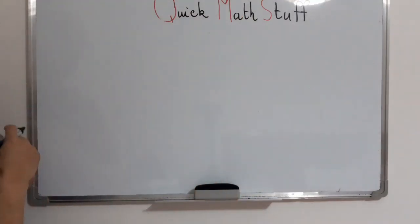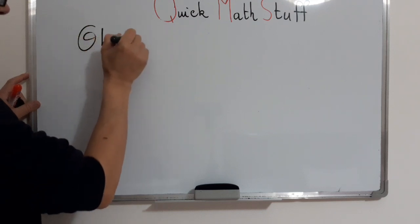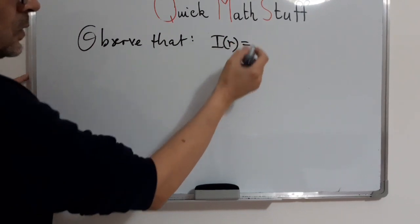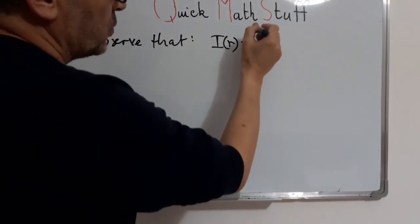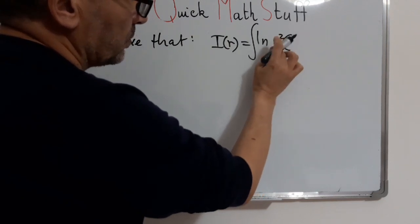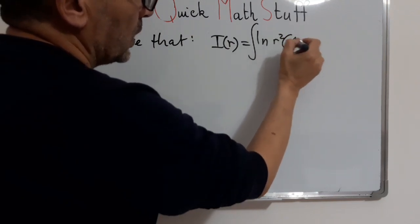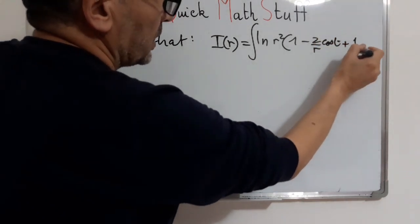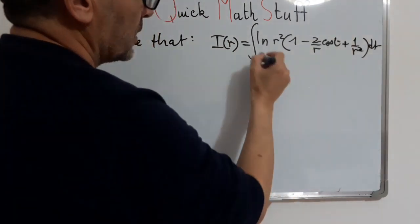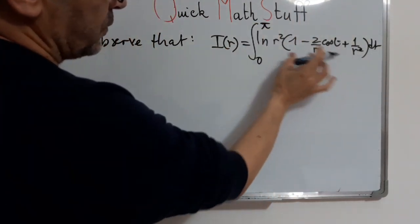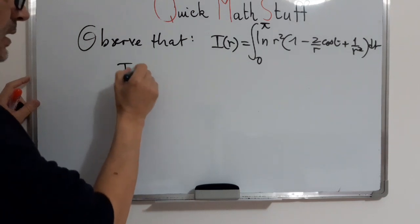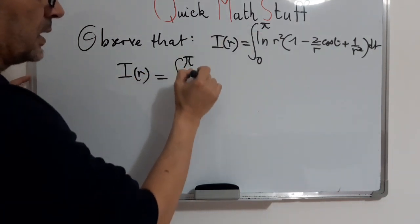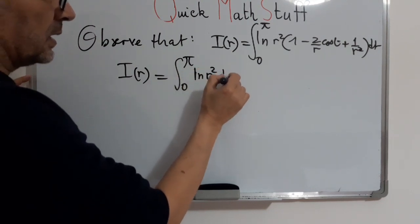For the second case, observe that I of r we will obtain in the following form: integral from 0 to π of ln of r squared, we factor by r squared, times 1 minus 2 over r cos t plus 1 over r squared dt. And from here, expanding, we will obtain I of r equals integral from 0 to π of ln of r squared dt